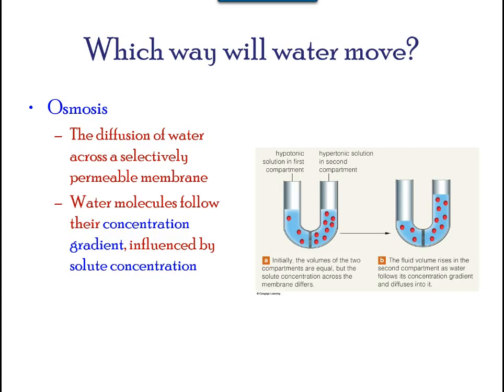Osmosis is the diffusion of water through a semi-permeable membrane, according to the concentration gradient of water across the membrane. Whereas diffusion transports material across membranes and within cells, osmosis transports only water across a membrane, and the membrane limits the diffusion of solutes in the water.